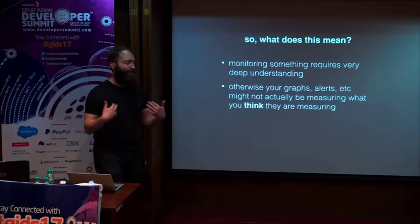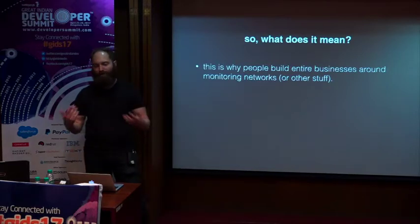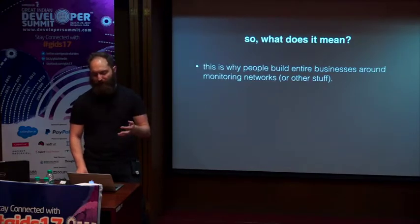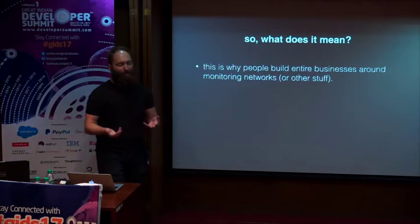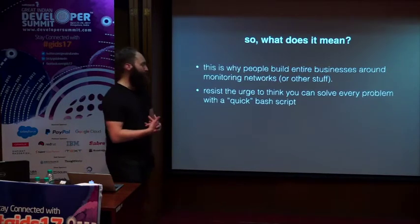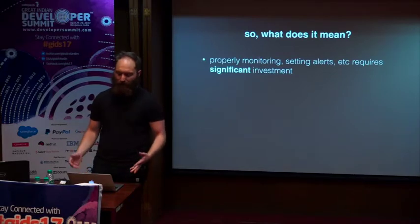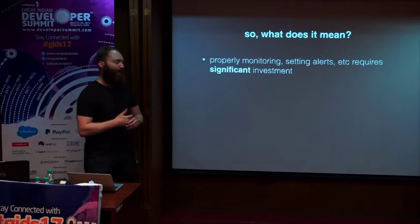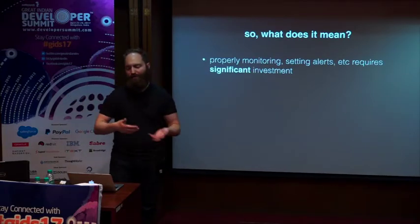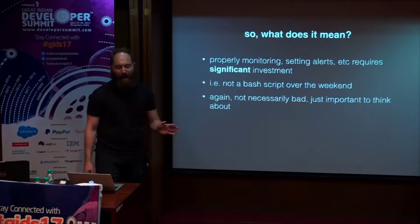So what does all this mean? What do all these bugs in network monitoring, the network stack, device drivers, and firmware actually mean? I think it means that monitoring something really complicated requires a really, really deep understanding. Otherwise your graphs and the alerts you set on them may not actually be measuring what you think they're measuring. This is why people build entire businesses around monitoring networks — because software stacks are really, really complicated. I would urge programmers to resist the urge to say 'I can fix this, I can just write a simple bash script to monitor all this stuff.' A lot of these problems are a lot more complicated than that. Properly monitoring and setting alerts requires significant investment — both engineering time and financial investment. You actually have to pay people to sit there and read all this code to understand how things work if you want to monitor them properly.